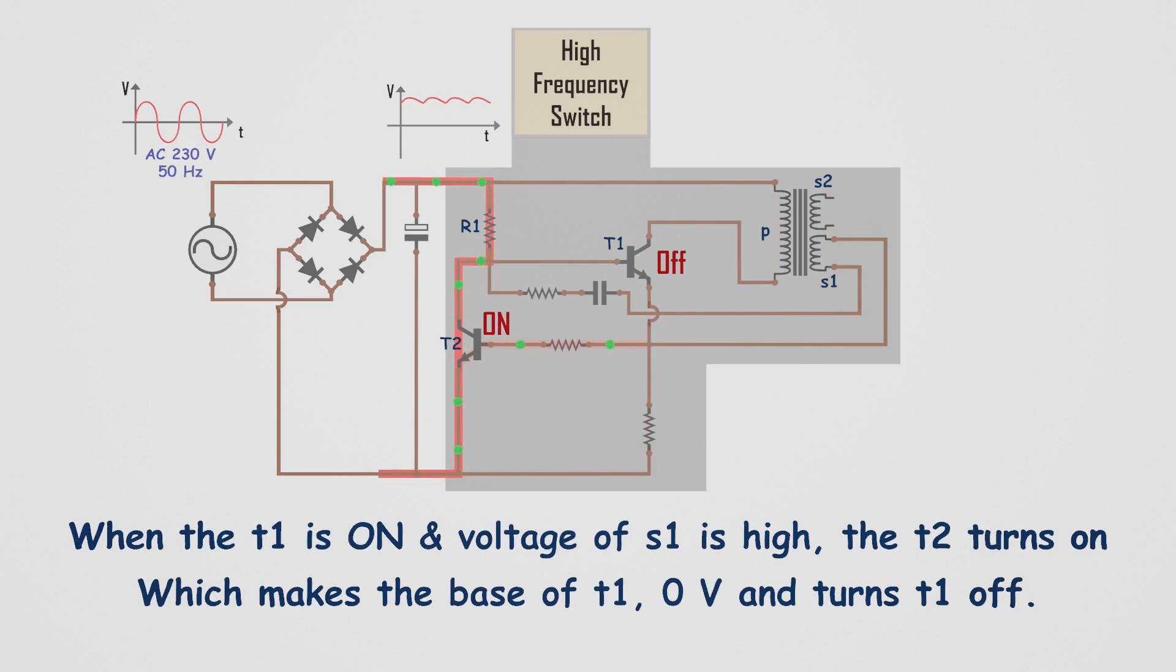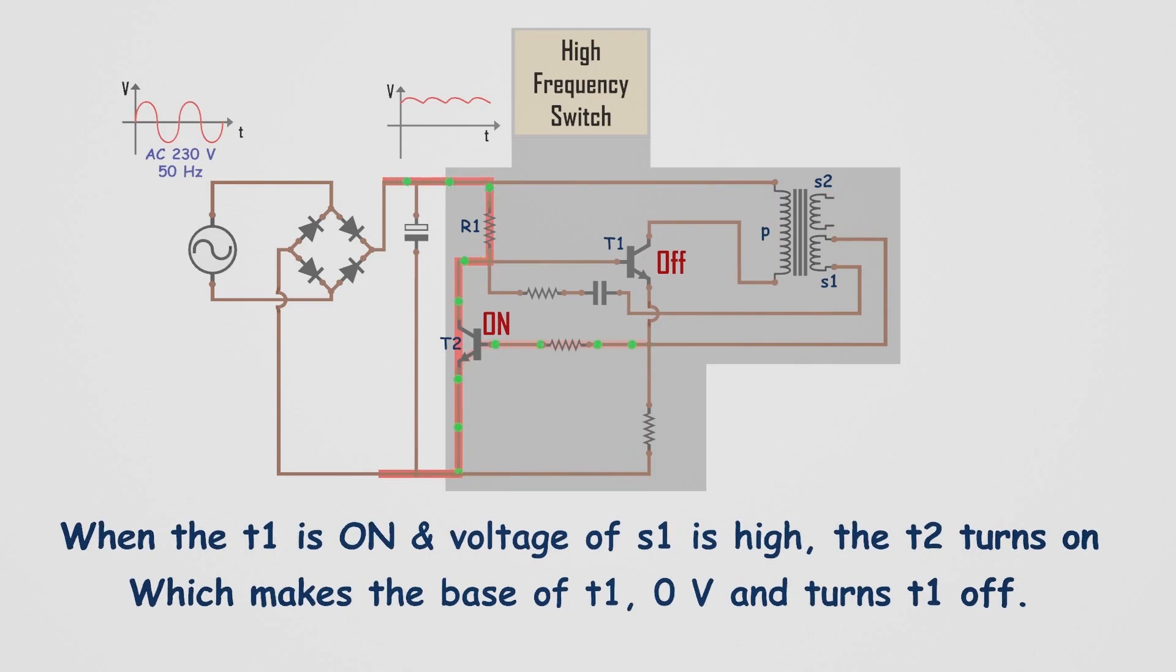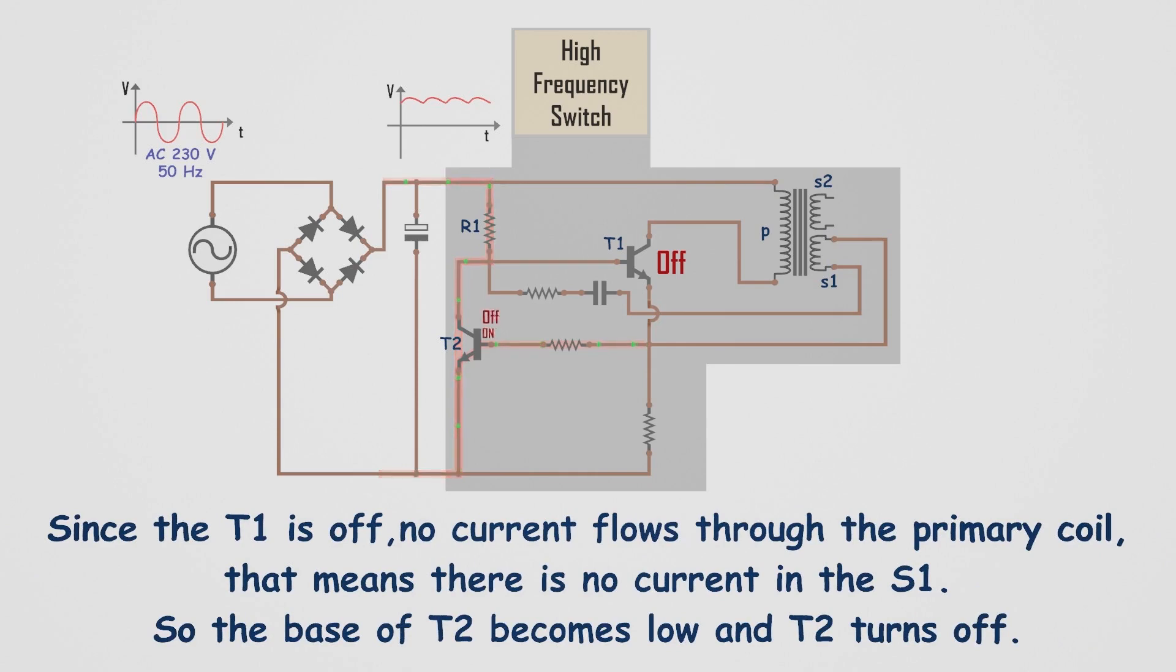With T1 turned off, no current flows through the primary coil, causing no current to flow in S1. As a result, the base of T2 becomes low, turning T2 off as well.